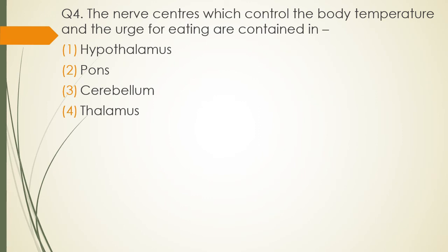Question 4. The nerve centers which control body temperature and urge for eating are contained in — hypothalamus, pons, cerebellum, or thalamus? The control centers for body temperature and eating. The correct answer is option 1 — they are contained in the hypothalamus.